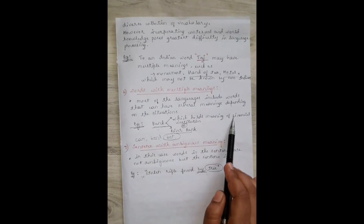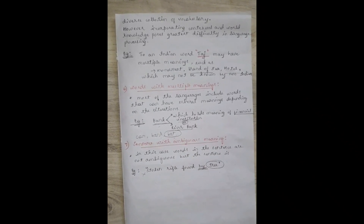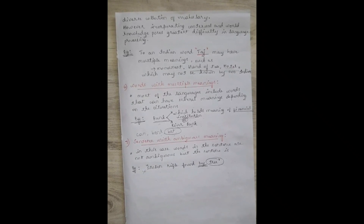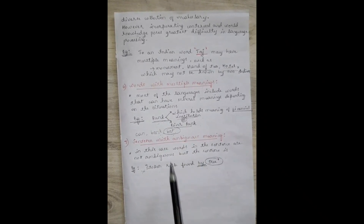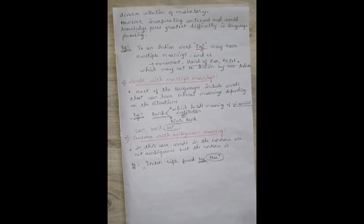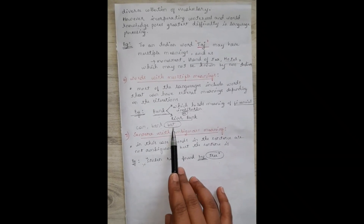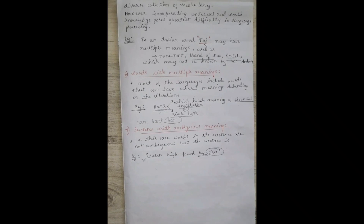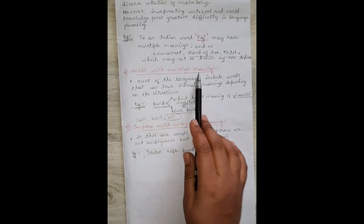Words with multiple meanings is another challenge. A single word may hold multiple meanings. For example, 'bank' can refer to a financial institution where transactions happen, or it can refer to a river bank. Similarly, 'bat' can be the tool used to play cricket, or it can be an animal — a mammal that belongs to a group related to birds. It is difficult for a machine to analyze which context the word is being used in.